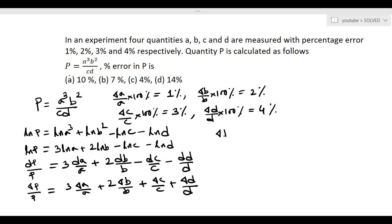So delta P by P into 100% equals 3 times delta A by A into 100%, which is 1%, so this equals 1% plus 2 times delta B by B into 100%, which is 2%, that is 2%, plus delta C by C into 100%, this is 3%, plus delta D by D into 100%, which equals 4%. So this is equal to 3 plus 4 plus 3 plus 4, that is 3 plus 4 equals 7, plus 3 equals 10, plus 4 equals 14%. So the error in the measurement of P is 14%.